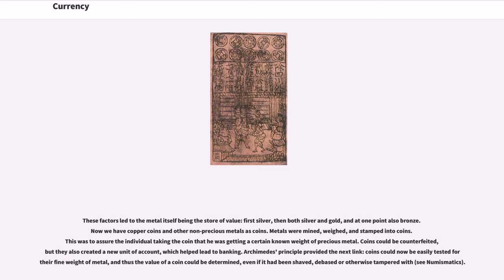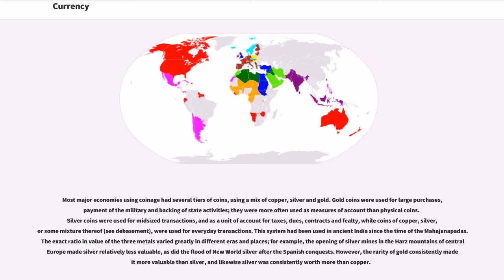These factors led to metal itself becoming the store of value — first silver, then both silver and gold, and at one point also bronze. Metals were mined, weighed, and stamped into coins to assure the recipient of a certain known weight of precious metal. Coins could be counterfeited, but they also created a new unit of account which helped lead to banking. Archimedes' principle provided the next link: coins could now be easily tested for their fine weight of metal, allowing the value of a coin to be determined even if it had been shaved, debased, or otherwise tampered with.